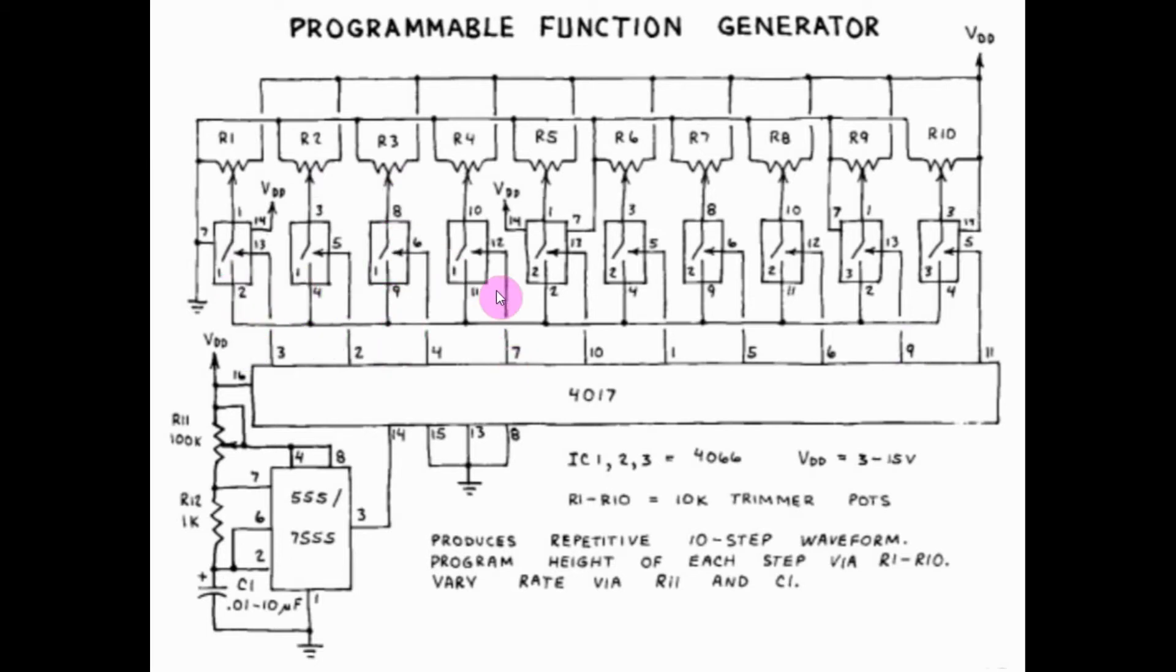And the other side of each switch they are interconnected and the output of this circuit would be at any point here. The output of each switch is a rectangular pulse, the amplitude of which can be controlled by its associated pot.